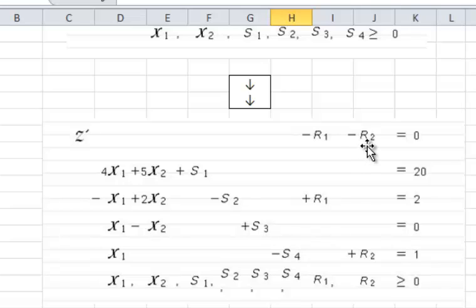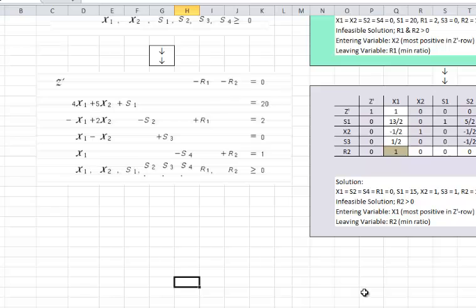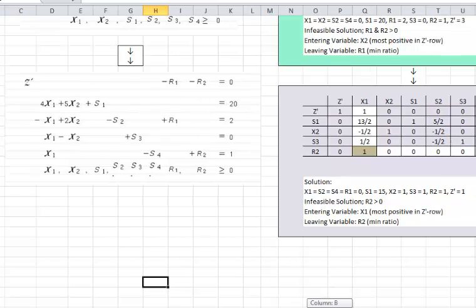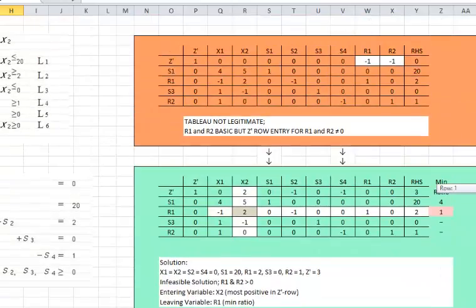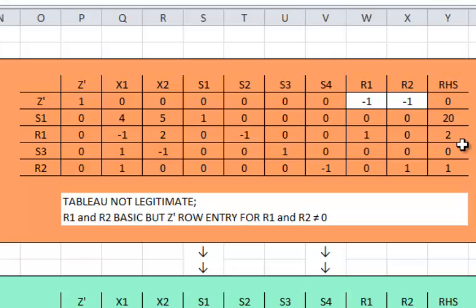Again, we are going to write our standard form of the problem and after having the standard form of the problem, we are going to write the phase 1 problem. In this case, R1 and R2 are artificial variables and they are added to these two constraints.